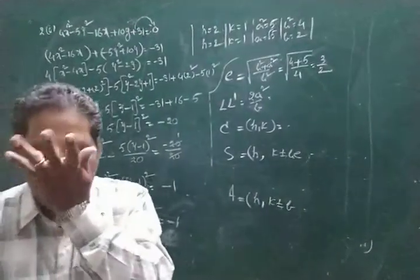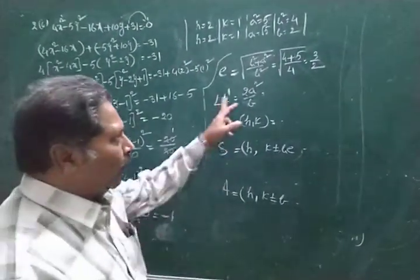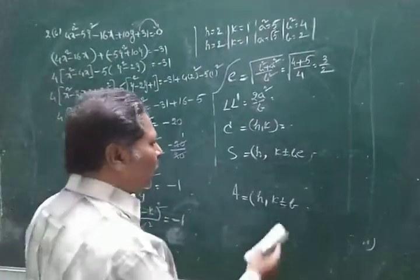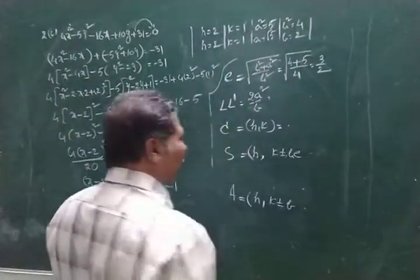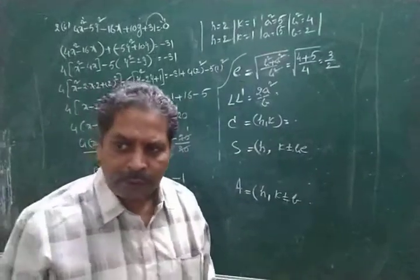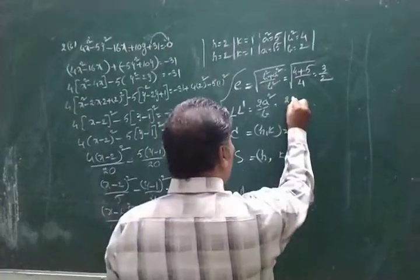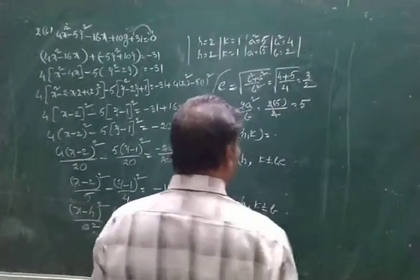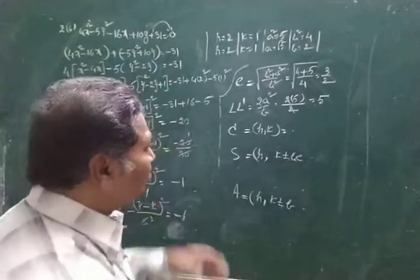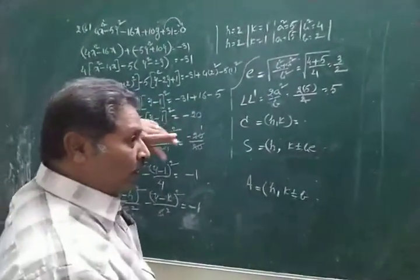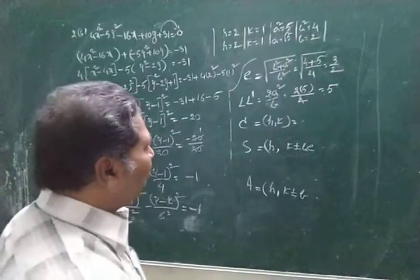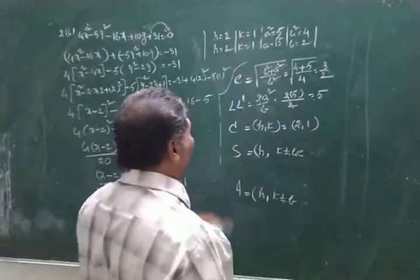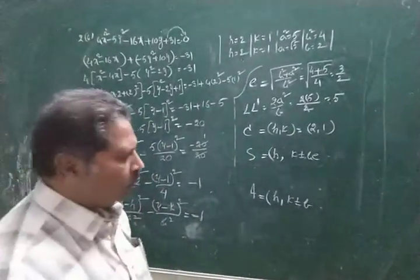Length of latus rectum: 2a squared by b, with a squared equals 5 and b equals 2, giving 2 into 5 by 2, which simplifies to 5. Center is h comma k, with h equals 2 and k equals 1, so center is 2 comma 1.